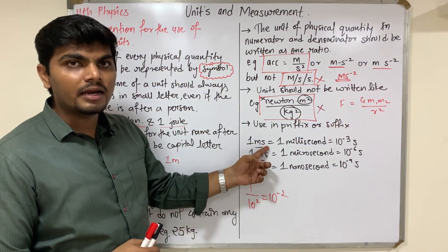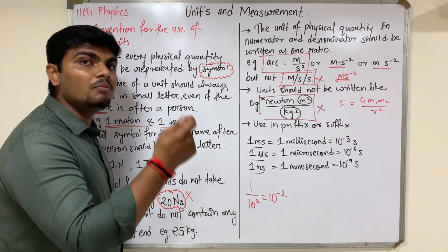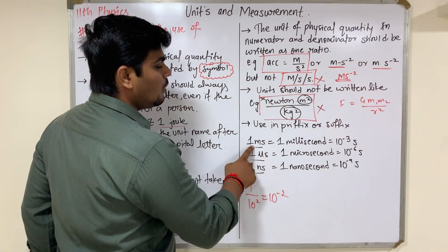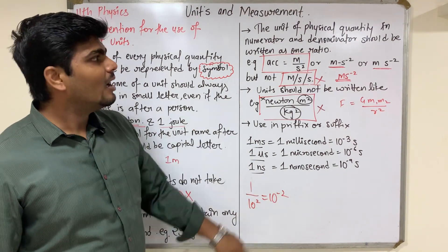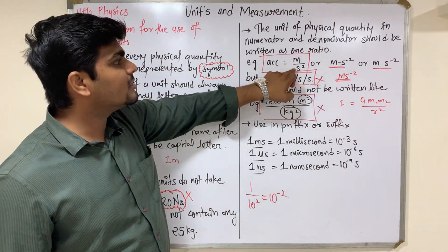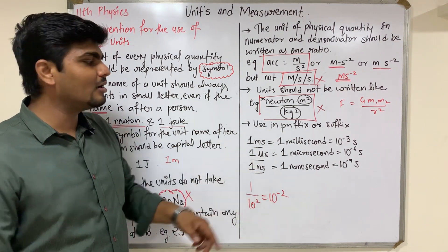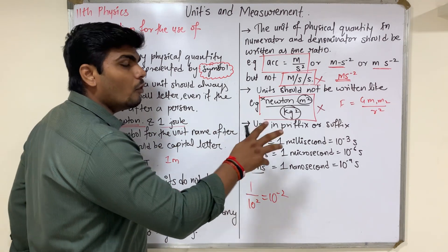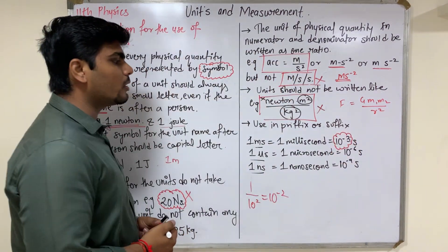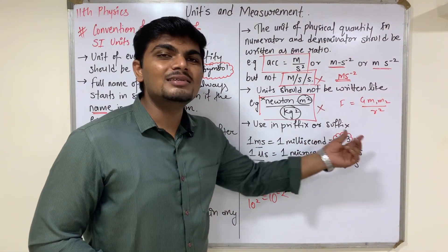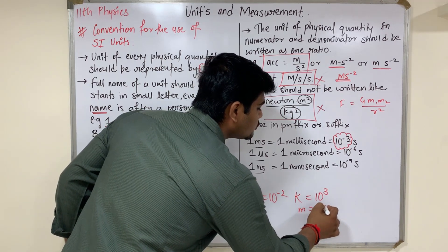For example, 'millisecond' — here 'second' is the unit. The prefix 'milli' (small 'm') means 10 raised to the power minus 3. So 1 millisecond = 10⁻³ seconds. Similarly, 'kilo' means 10 raised to 3 — so 1 kilometer = 10³ meters. 'Milli' means 10⁻³, so 1 millimeter = 10⁻³ meters. Note: when writing 'ms', you need a space — otherwise 'ms' without space means millisecond, not meter-second.